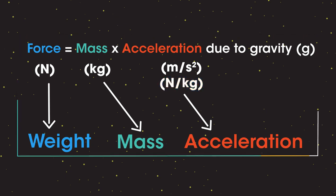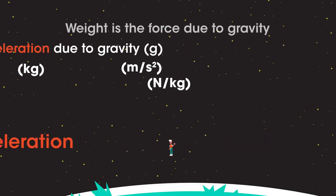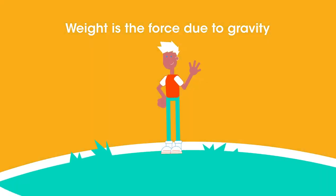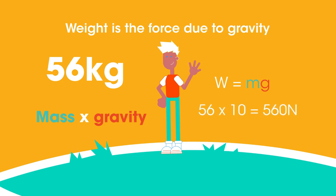So let's now use this lovely equation to find my weight. Weight is the force due to gravity, and that depends upon the masses of the two objects that are attracted. On Earth, my weight is mass times gravity, so roughly 56 kilograms times 10, which is 560 newtons.